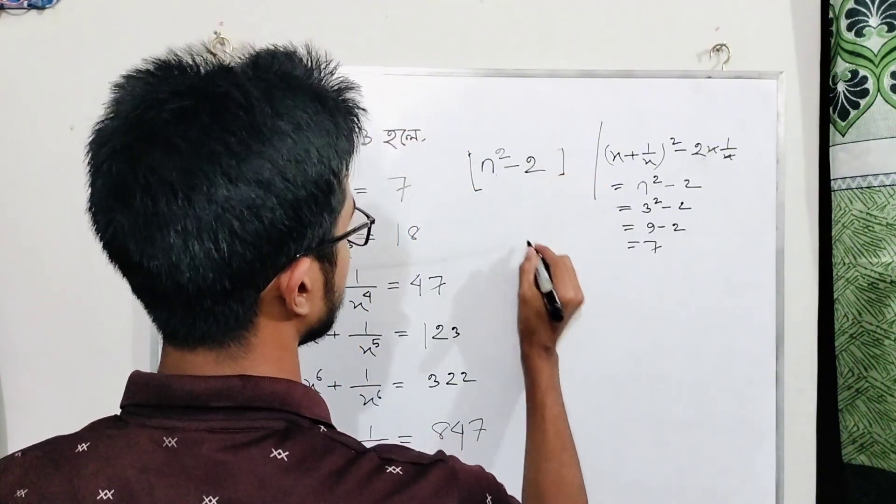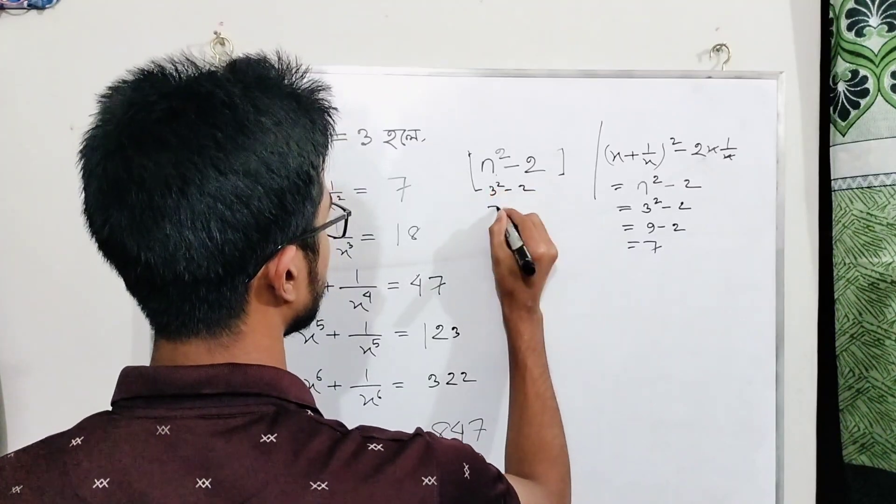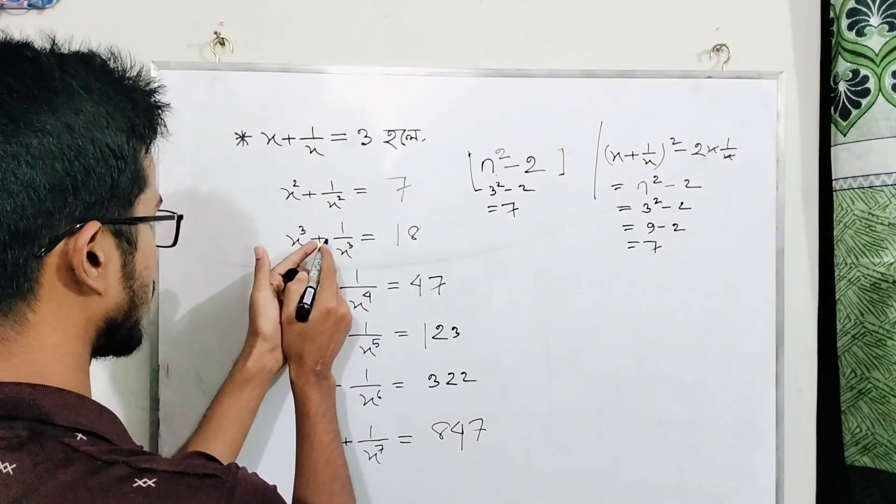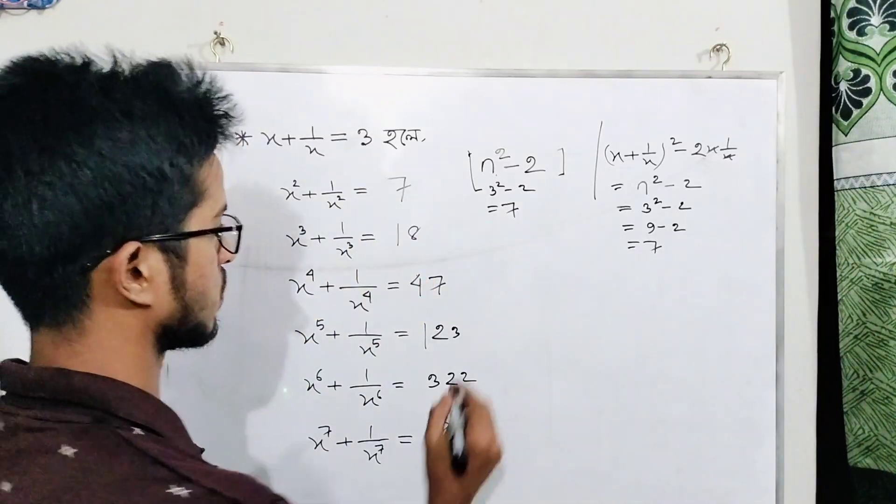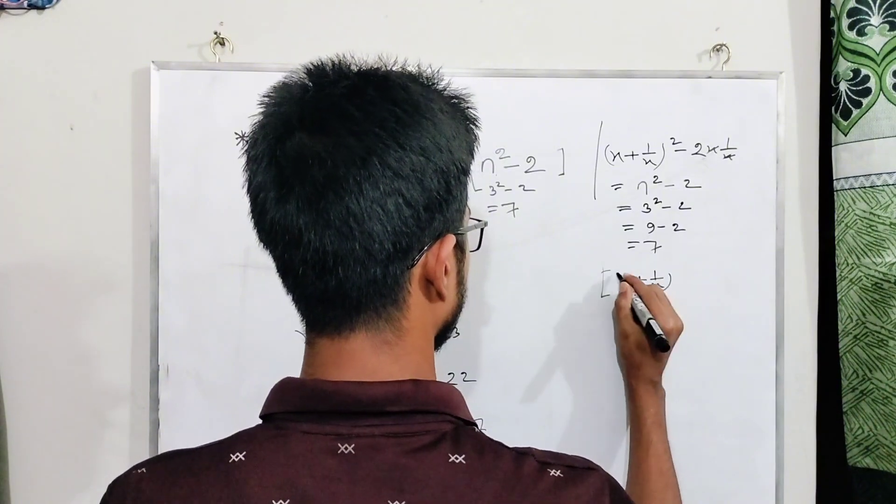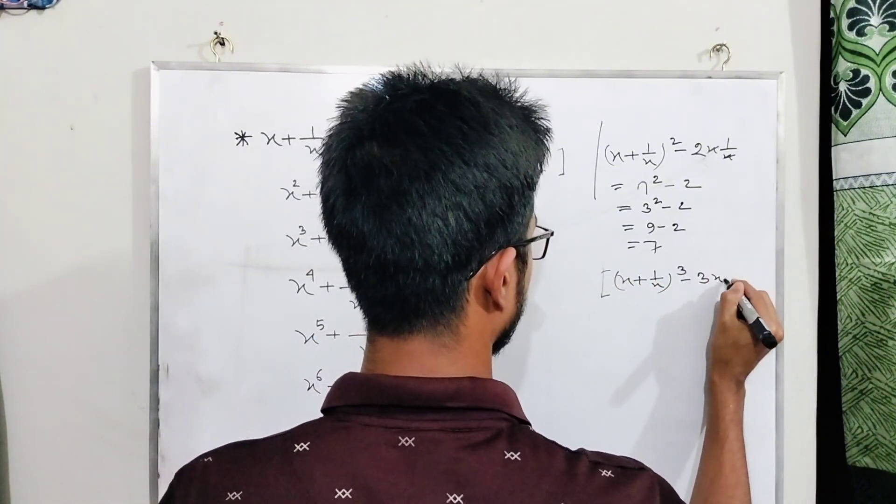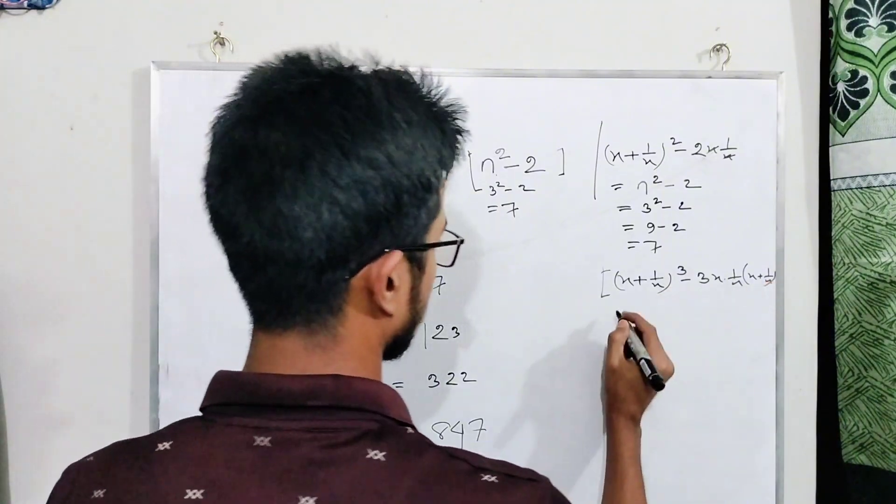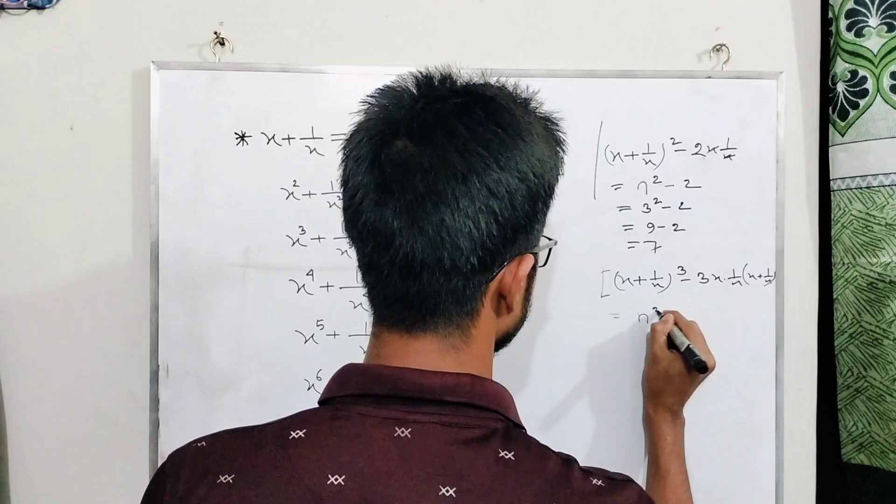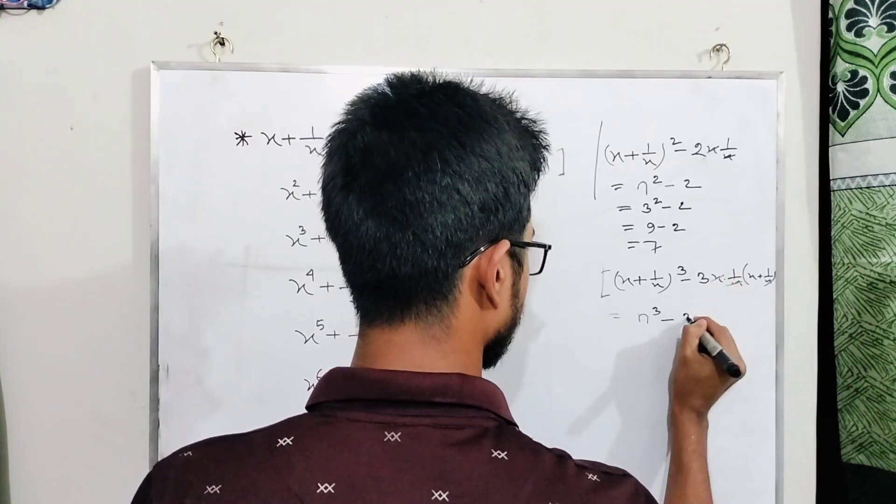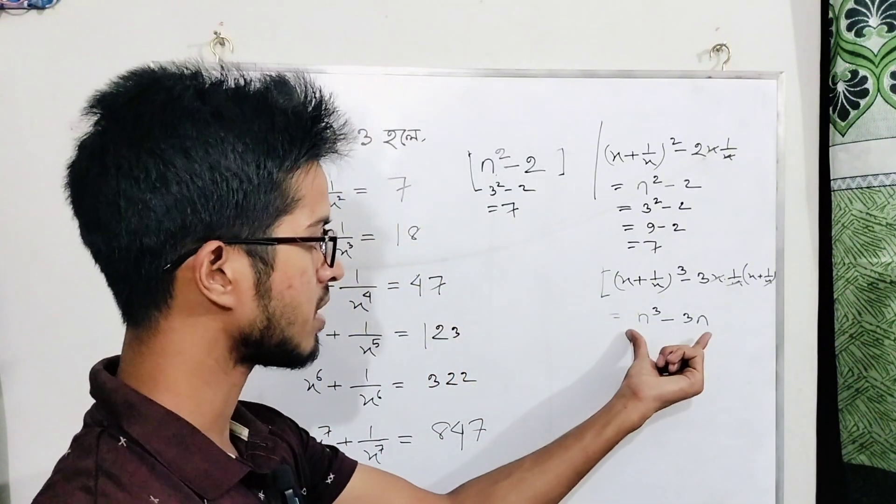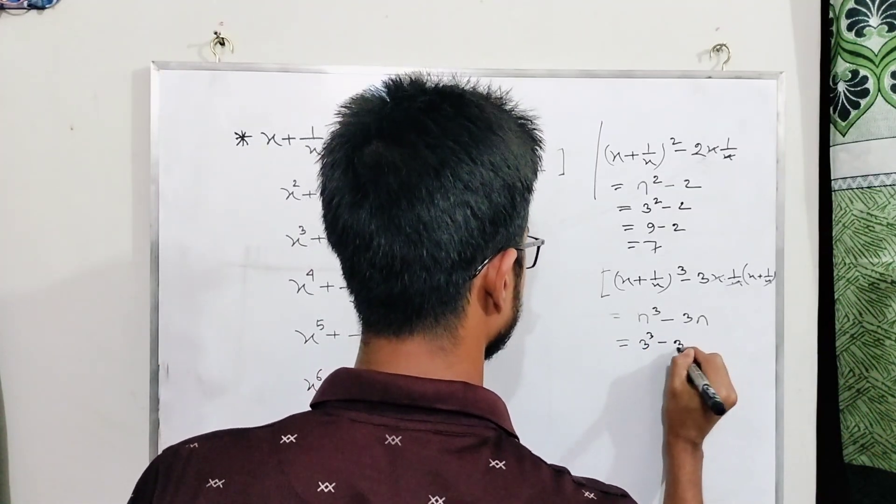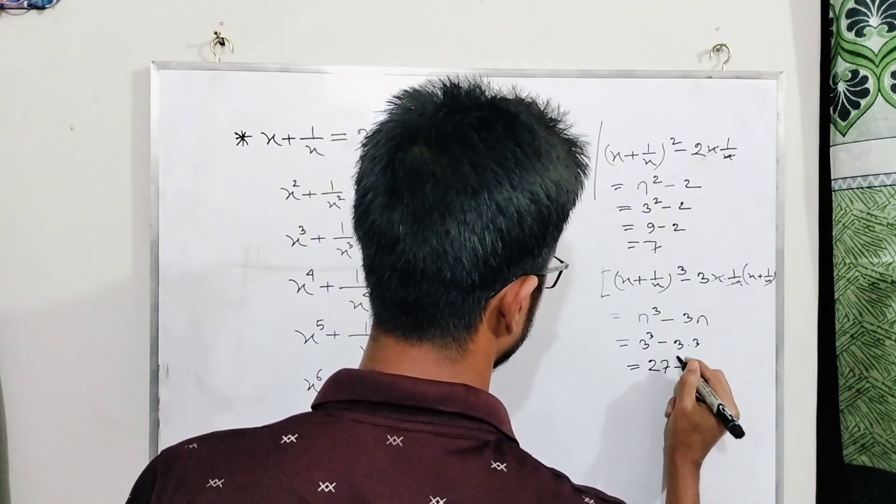Now to find x cube plus one by x cube, we use the formula: (x plus one by x) whole cube minus three times (x plus one by x). Using the identity a cube plus b cube equals (a plus b) cube minus three ab (a plus b), we get three cubed minus three times three.